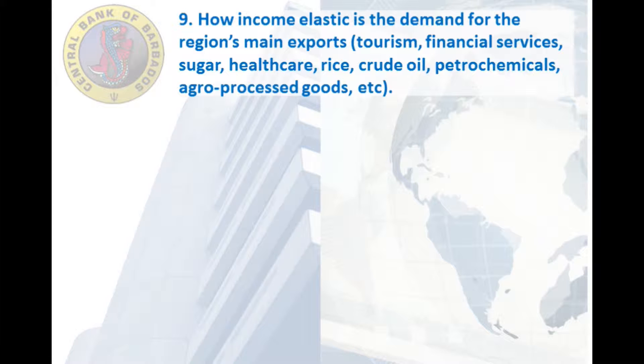We did not discuss this particular issue. We have spoken about elasticities, but not about how income elastic is the demand for the region's main exports — tourism, financial services, sugar, healthcare, rice, good oil, petrochemicals, agro-processed goods, etc. I've seen some attempts in other contexts — for example, somebody wrote a paper trying to explain the income elasticity of demand through the export channel of Italian goods by industry.